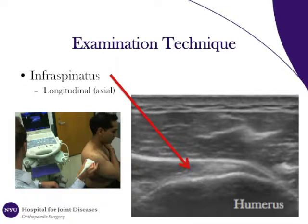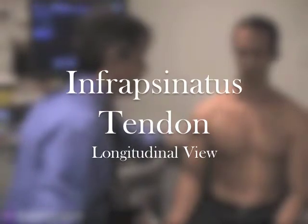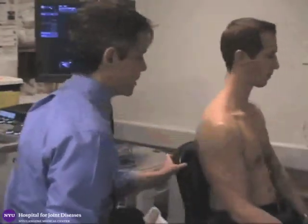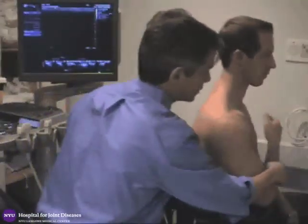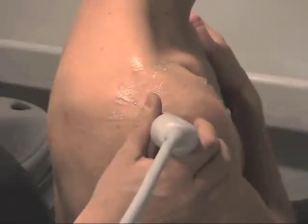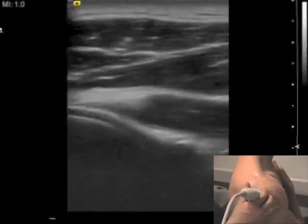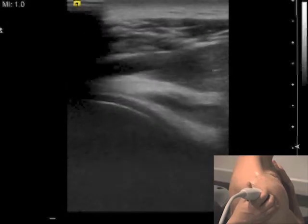The infraspinatus tendon is the next structure to be imaged, done in the longitudinal plane. To image the infraspinatus tendon, the patient is rotated slightly on the swivel stool to allow access to the posterior lateral aspect of the shoulder. The image obtained should be similar to the one shown, with the infraspinatus demarcated by the red arrow. The patient's arm is positioned across the chest and the probe is positioned just slightly posterior and lateral to the shoulder.